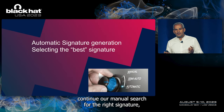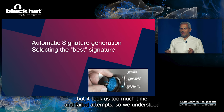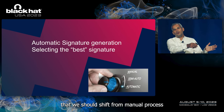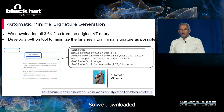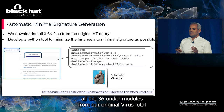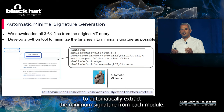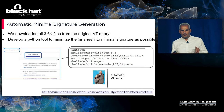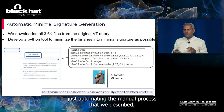We continued our manual search for the right signature, but it took too much time with too many failed attempts. We understood we needed to shift from a manual process to an automatic one. We downloaded all 3,600 malware samples from our original VirusTotal hunting query and developed a basic tool to automatically extract the minimal signature from each malware, automating the manual process we described.